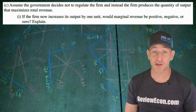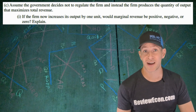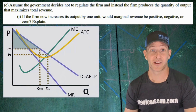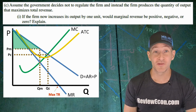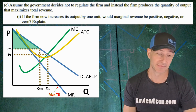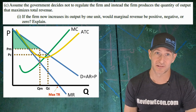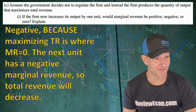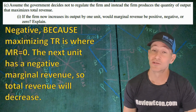For part C, we have a new scenario where the firm is producing the quantity that maximizes total revenue. For part CI, we are asked if the firm produces one more unit of output, whether marginal revenue will be positive, negative, or zero. Maximizing total revenue is found where marginal revenue equals zero, because MR is the change in total revenue. For earlier units MR is positive and total revenue is increasing; at higher units MR is negative and total revenue is decreasing. As we can see on the graph, units beyond the total revenue maximization point have negative marginal revenue. So the answer is negative — the next unit produced has a negative marginal revenue and total revenue will decrease.